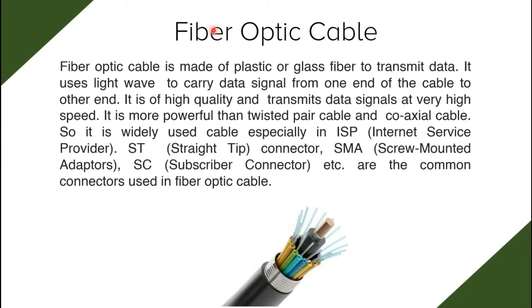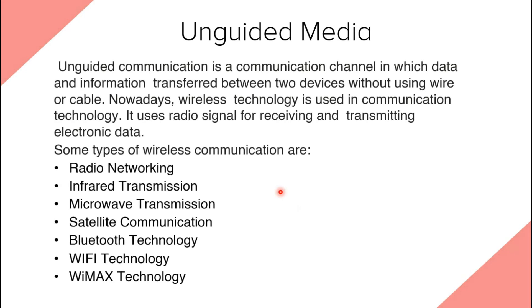Now let's discuss fiber optic cable — the new generation of cable. Fiber optic cable is made up of plastic or glass fiber to transmit data, using light waves to carry data signals from one end of the cable to the other. It transmits data signals at very high speed and is more powerful than twisted pair or coaxial cable, widely used by ISPs (Internet Service Providers). Common connectors include ST (Straight Tip), SMA (Screw Mounted Adapters), and SC (Subscriber Connector). It uses glass threads or plastic fibers and transmits high quality data at very high speed.